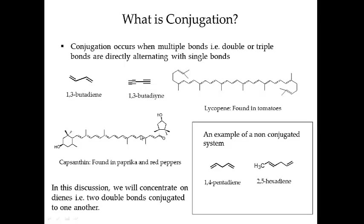These are just some examples of conjugated systems. Capsanthin is found in paprika. As you can see, the backbone is conjugated: double, single, double, single, double, and so on. Lycopene, which is found in tomatoes, also has a conjugated backbone.